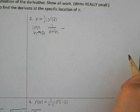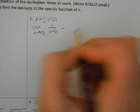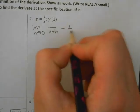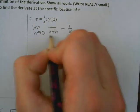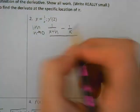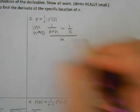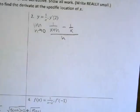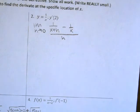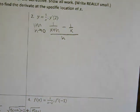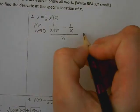1 over (x+h) minus 1 over x, all divided by h. So what method do we use to fix this complex fraction? Find the common denominator.